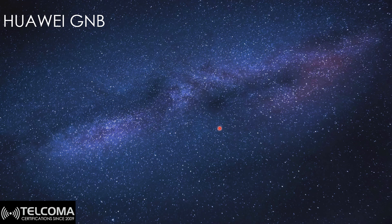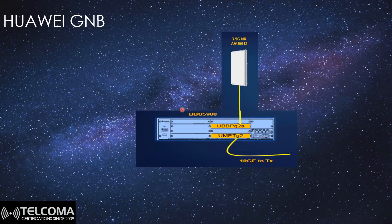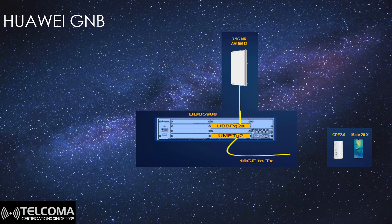Huawei also has the UBBPG G3, which is their latest and most recent baseband board. The common or transmission board, equivalent to ACIK in Nokia, is called the UMTG2, which supports 10GE transmission. This BBU connects to the AAU5613 to form the complete gNodeB. There are a few other cards used for different functions but they are less critical than these main components. You can then manage the system via the CBE or Huawei handsets like the Mate 20X or Mate 30 as a 5G user device.